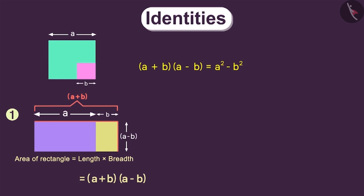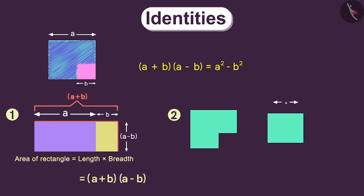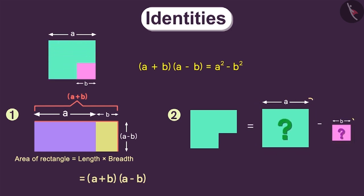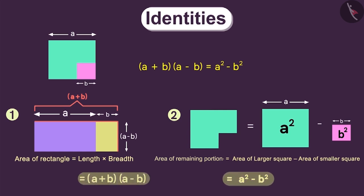There is another way to find this area. This area is actually equal to the area of this larger square minus the area of this smaller square. What will be the area of these two squares? The area of larger square will be a square and the area of the smaller square will be b square. Therefore, the area of this remaining portion will be equal to a square minus b square. Since these two expressions are equal to the area of this remaining portion, these two expressions will be equal to each other.